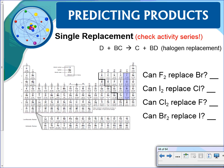Single replacement dealing with halogens: Can fluorine replace bromine? Yes it can. Can iodine replace fluorine? No. You can see iodine is not going to replace anything because it's at the very bottom. Can chlorine replace fluorine? No it cannot.